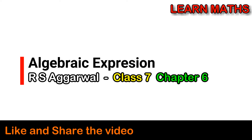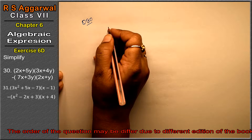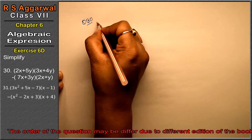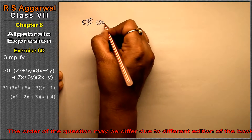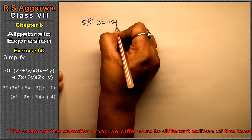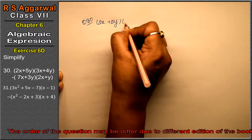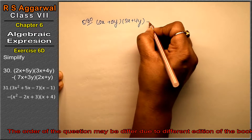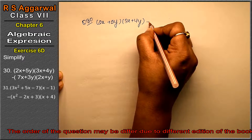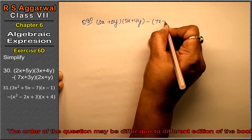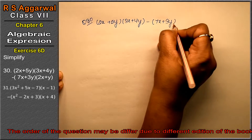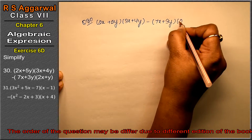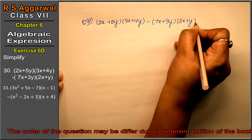Let's do question number 30 of exercise 6D, that is algebraic expression. Question number 30 is: simplify (2x + 5y)(3x + 4y) minus (7x + 3y)(2x + y).